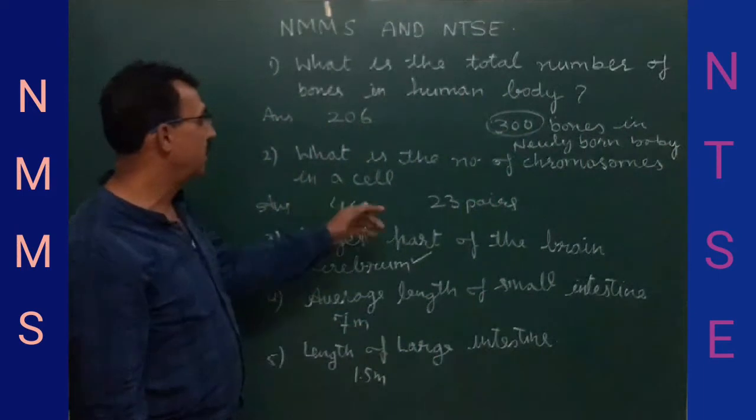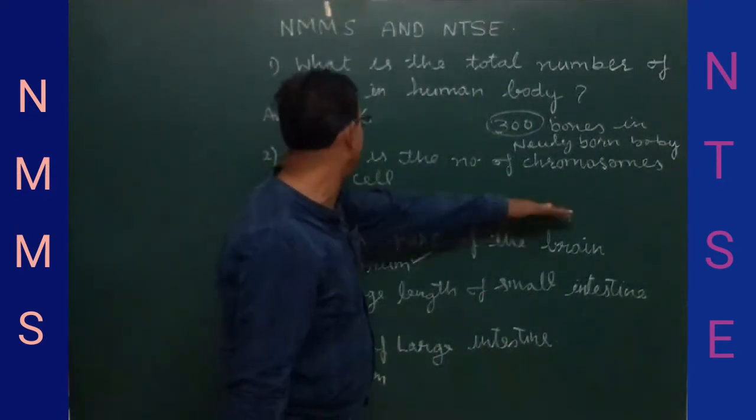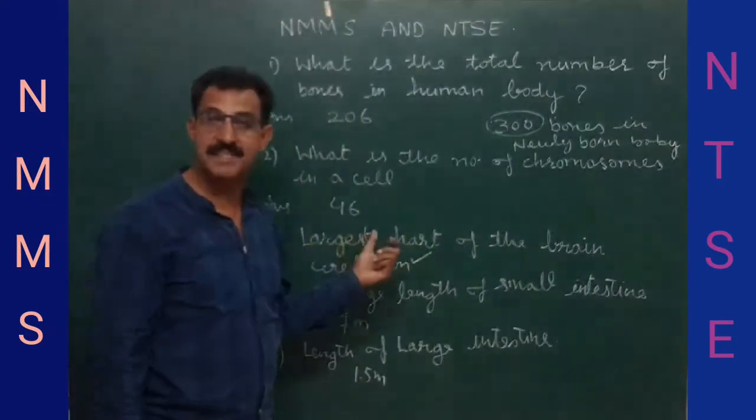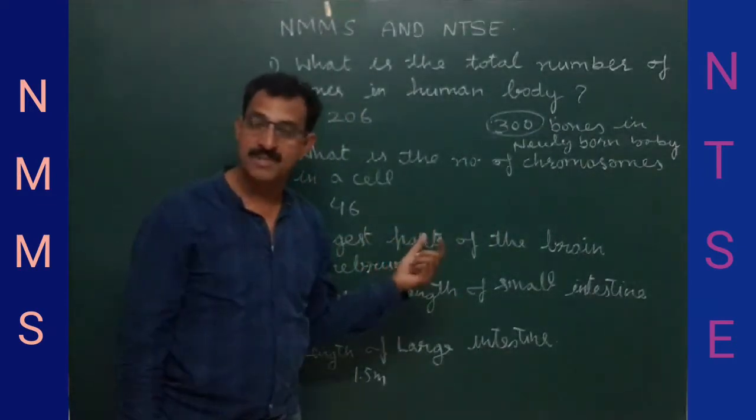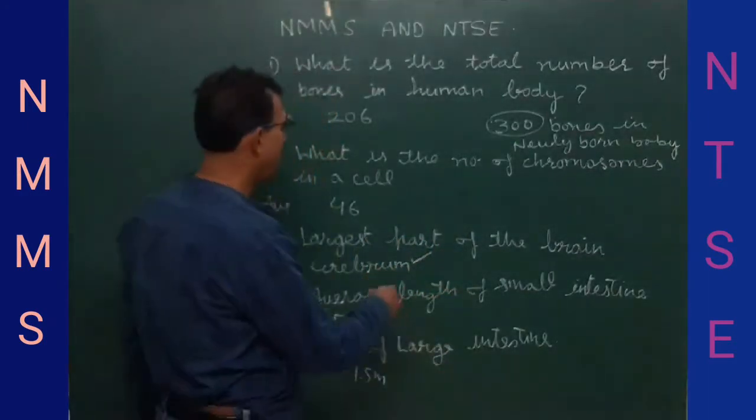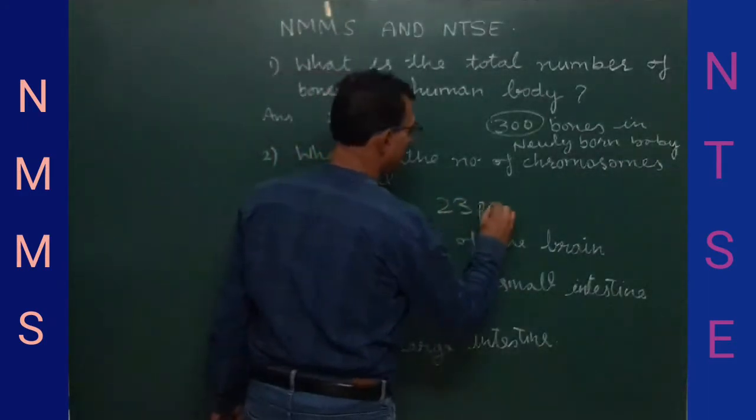Next, what is the number of chromosomes in a cell? There are 46 chromosomes in a cell. When you count in pairs, there are 23 pairs in total in each cell.